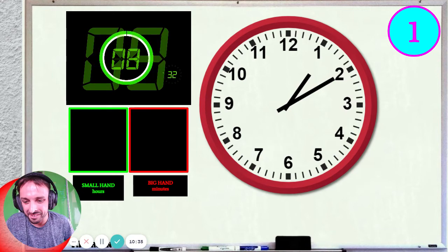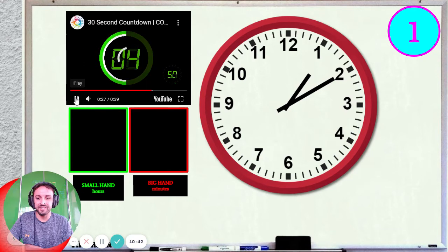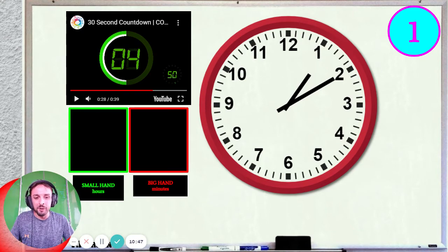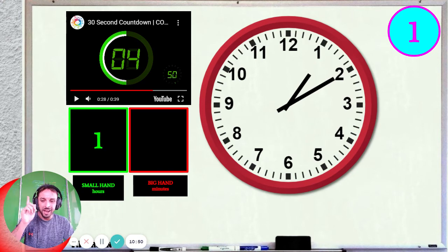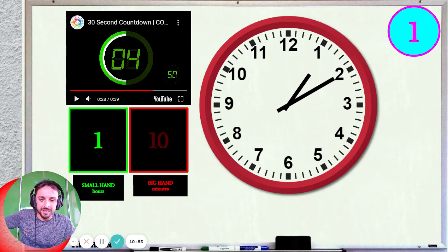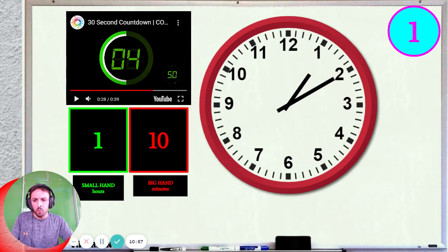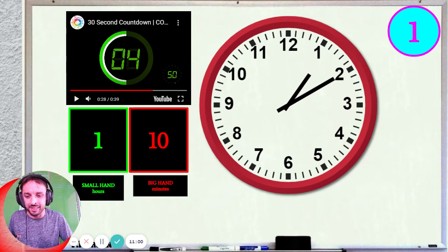Okay, time's up. The hour — how many hours? It's 1. The hour is 1 and the minutes is 10. That's right, so give yourself a tick if you wrote 1:10. That's question one — 1:10.